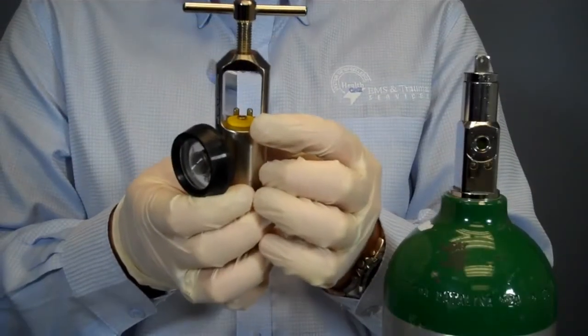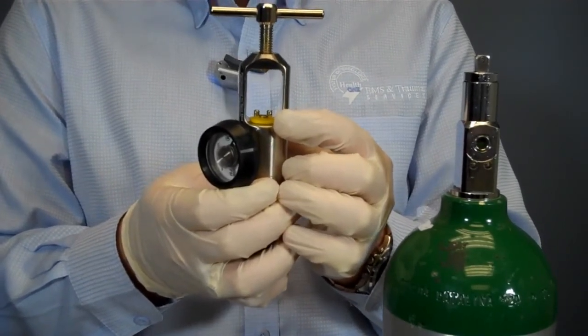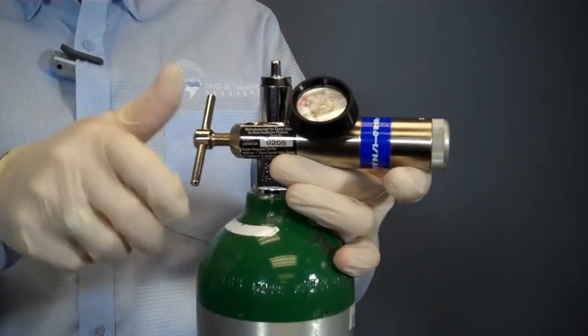Now I will assemble the regulator and the oxygen bottle. I will assemble the regulator onto the tank, ensuring the presence of an O-ring and proper alignment of the pins.